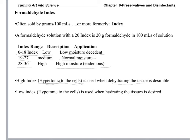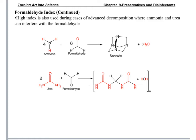A low-index solution is hypotonic, so you would use it when you are trying to increase the amount of moisture in the tissues. A high-index solution may also be used in cases of advanced decomposition, where ammonia and urea could otherwise interfere with the formaldehyde.